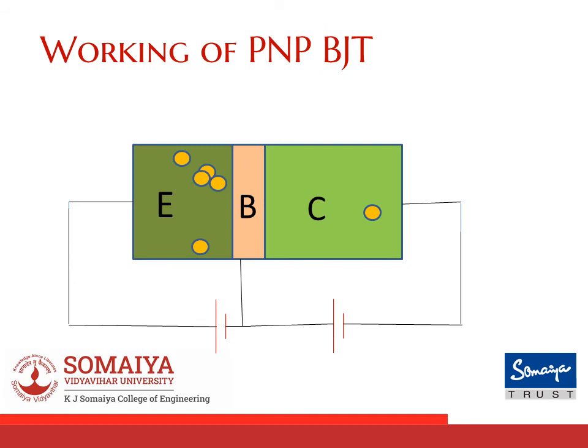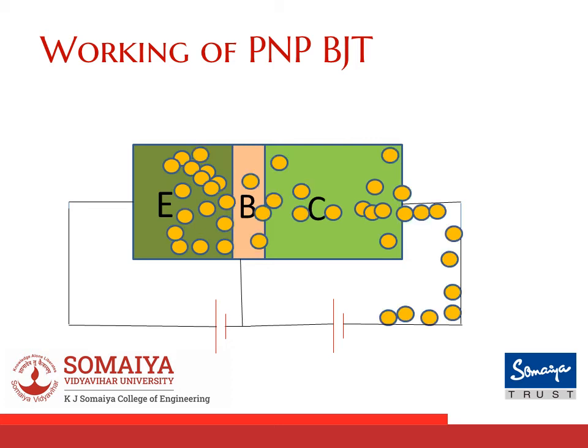Now let's look into the forward active mode for a PNP bipolar junction transistor. The working is very similar except that the charge carriers are exactly opposite. When you forward bias the emitter-base junction, the charge carriers, which are holes, move from the emitter-base junction to the collector and to the negative plate of the battery. This constitutes two currents, IE and IC.